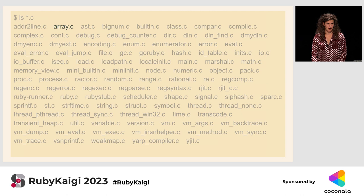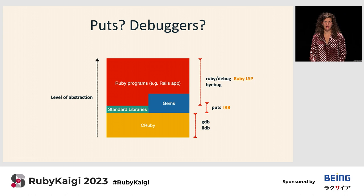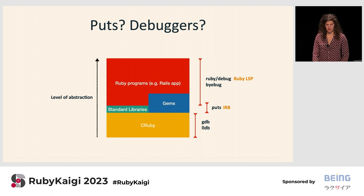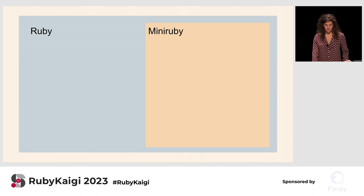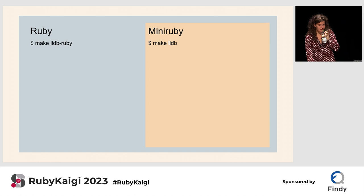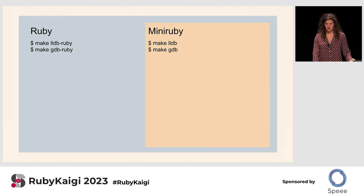Earlier today I was in Stan Lowe's talk about building a mini Ruby debugger. He had a slide about how debuggers work at different levels of the stack. What we're focusing on today is the bottom layer — CRuby itself. As Stan described, the two debuggers we can use here are GDB and LLDB. To run our test file with LLDB using Ruby, we run `make lldb-ruby`; with MiniRuby it's `make lldb`. The GDB commands mirror those.